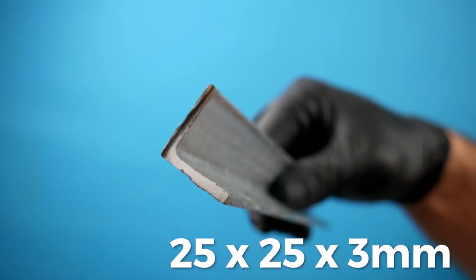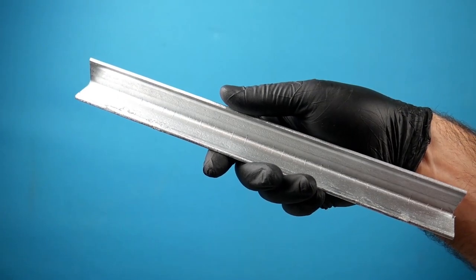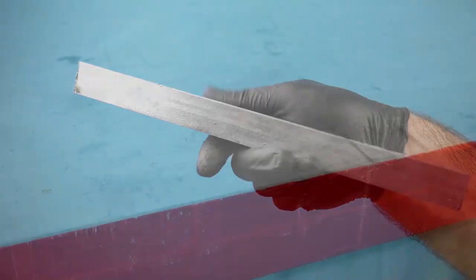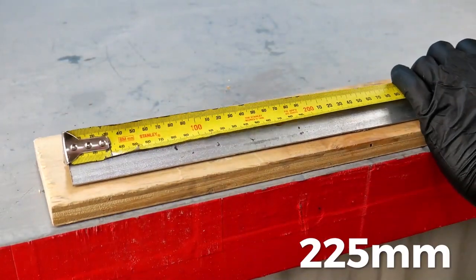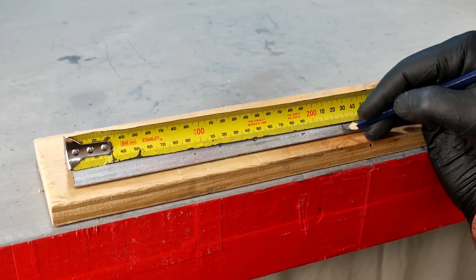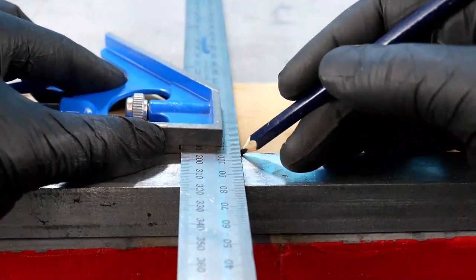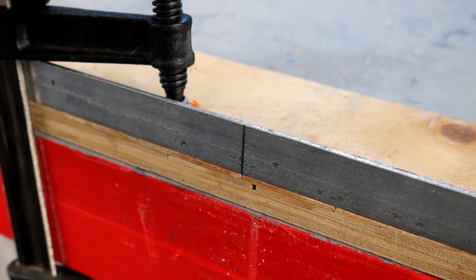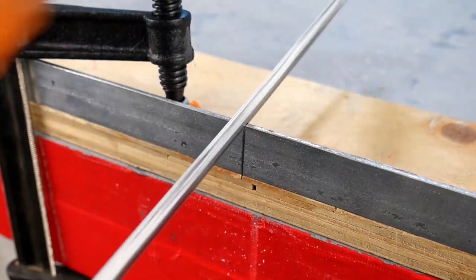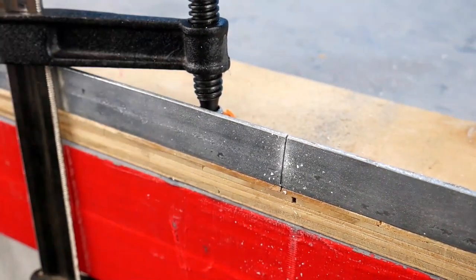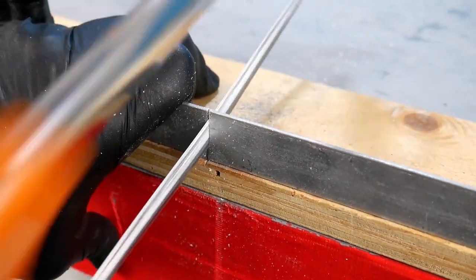I'll start with the main body. I'm going to use a piece of 25 x 25 x 3mm thick galvanized steel angle. I put the angle on the bench and measure out 225mm, then I mark it using a square. I bring it close to the edge of the bench and clamp it down. With a hacksaw I cut through the mark. I rotate and clamp it and cut the other side.